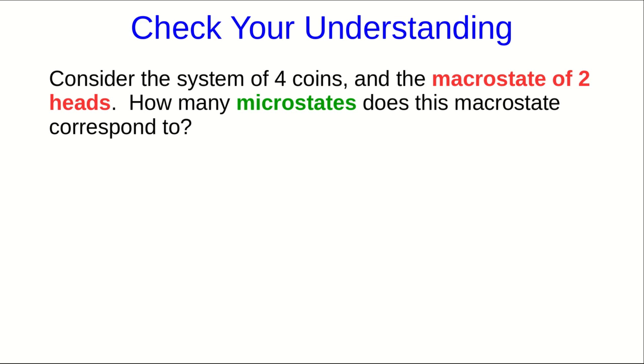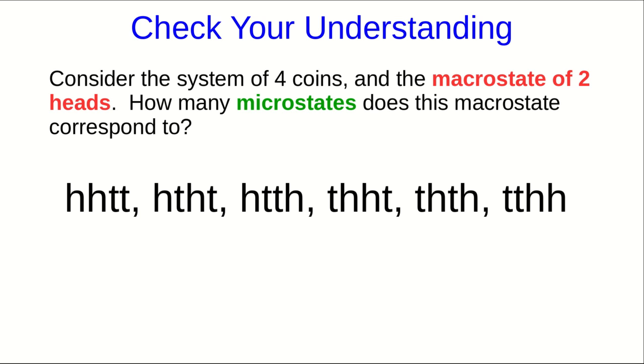At the end of the previous part of this video, I asked you to figure out how many microstates the macrostate of two heads in a system of four coins has. If you've taken a stats course or combinatorics, you'll know some sophisticated ways to do this, but there aren't so many microstates here, so you can just write them all down brute force. And there they all are, and so there are six.